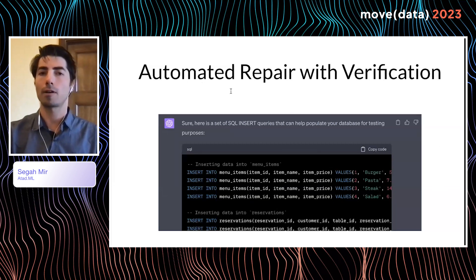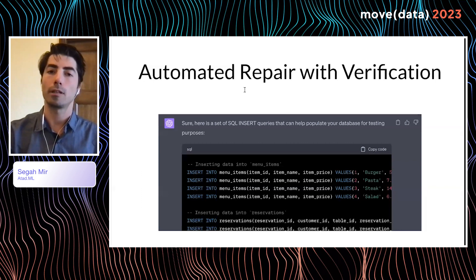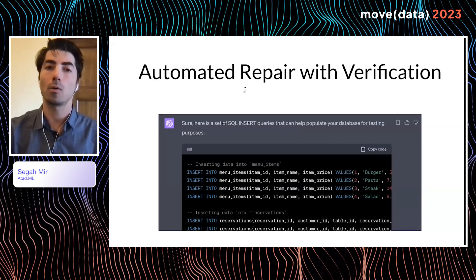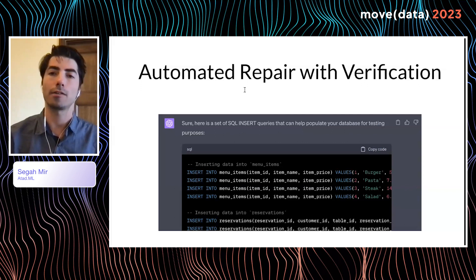Another problem that we commonly encounter here is that repair is also not enough. We also need verification to make sure that data schema and code are consistent with each other. Here, the machine generates, in this particular example, the machine generates fake data, fake data to test this consistency. Engineers commonly refer to this as unit testing in a traditional software paradigm. And we need something similar when we're talking about verifying the accuracy of generated code for production level systems.